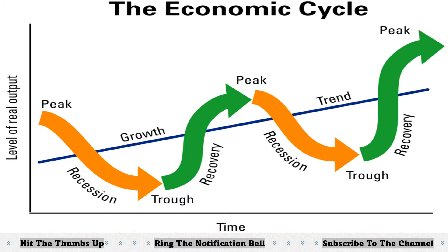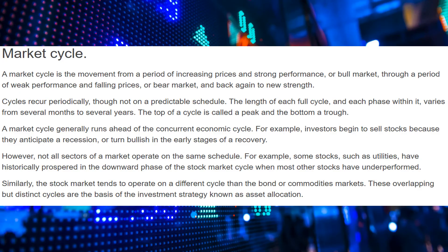Next, let's look at the market cycle. What is the market cycle? It's real similar to the economic cycle. A market cycle is the movement from a period of increasing prices and strong performance, or bull market, through a period of weak performance and falling prices, or bear market. The bull market is that growth upward trend. Your bear market is that downward trend into a recession, or even the bottom of a recession if you flow sideways through recession for a while. Cycles recur periodically, though not on a predictable schedule. The length of each cycle and each phase within it varies from several months to several years.